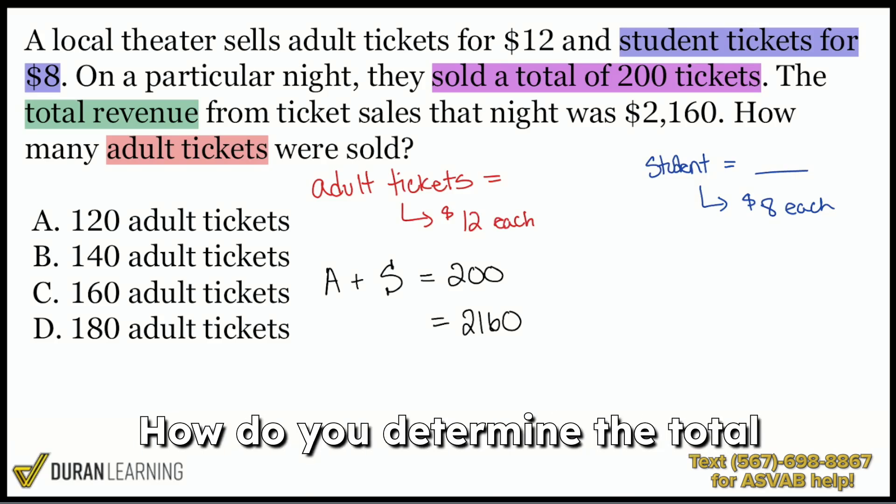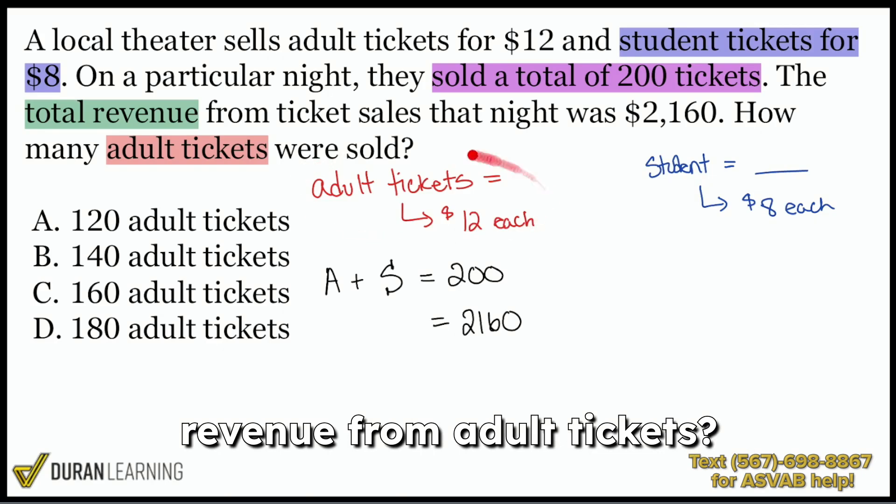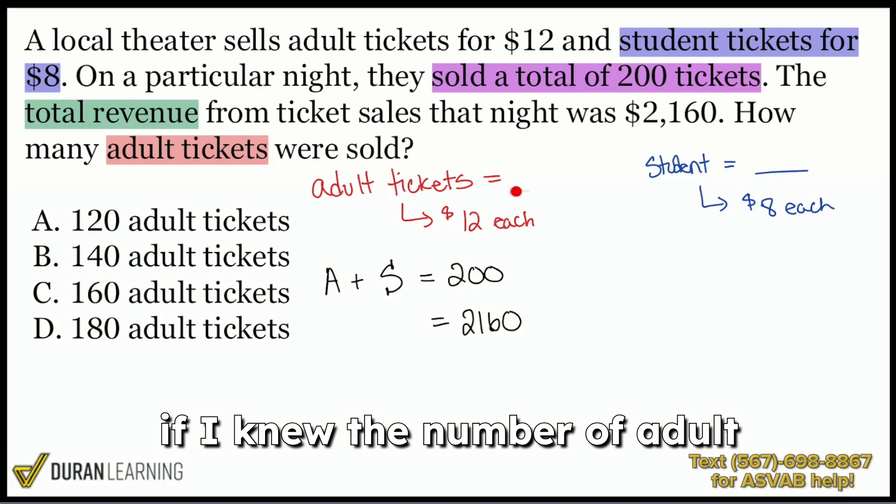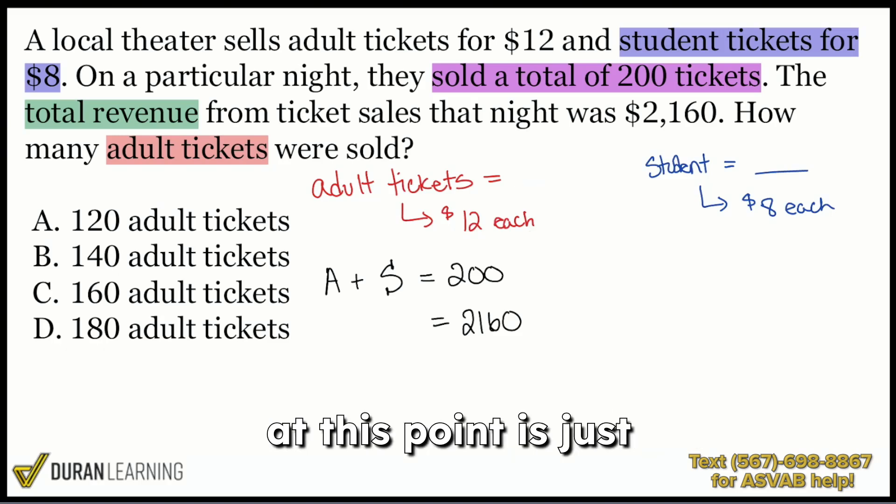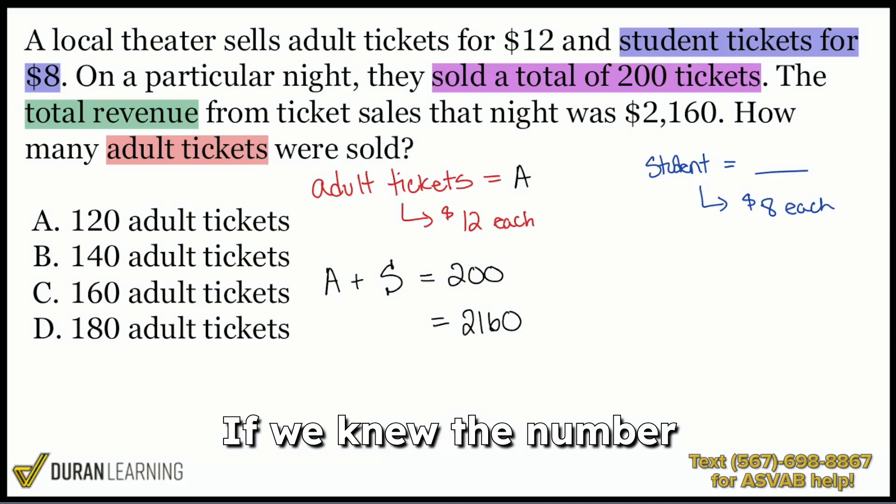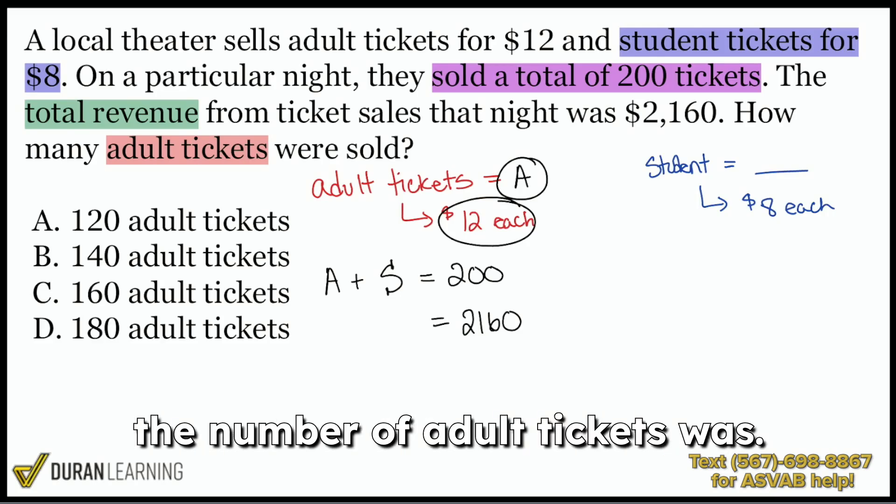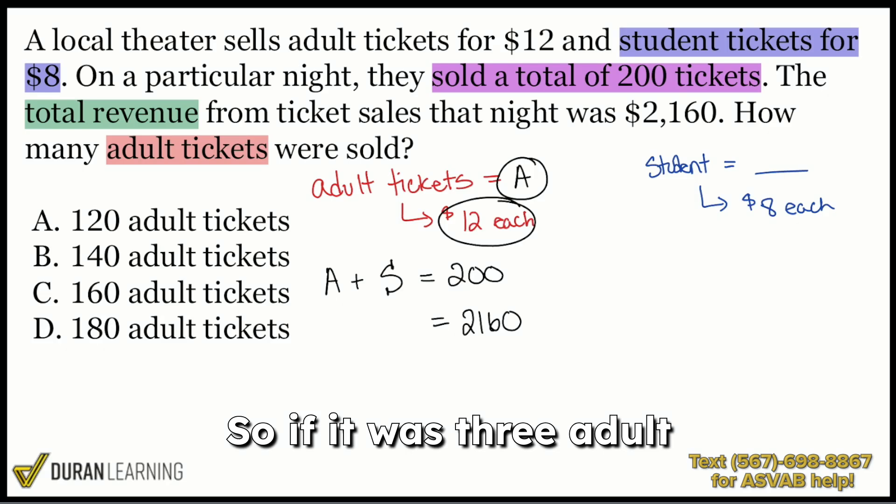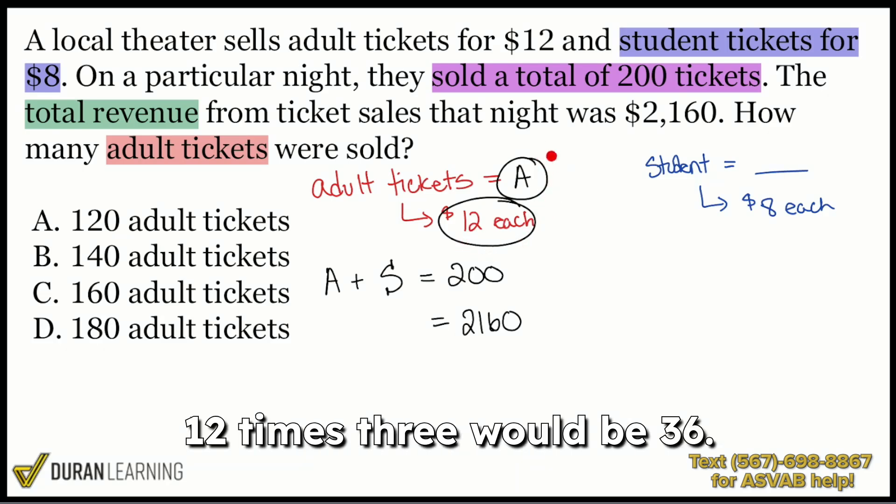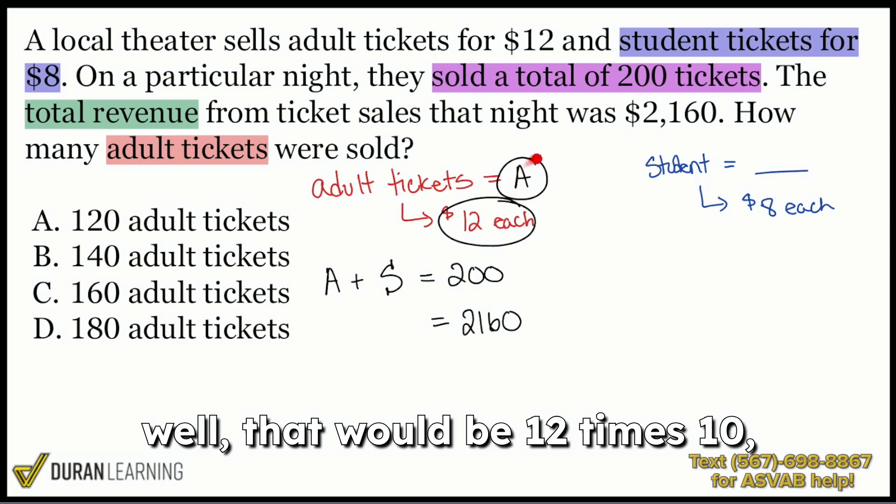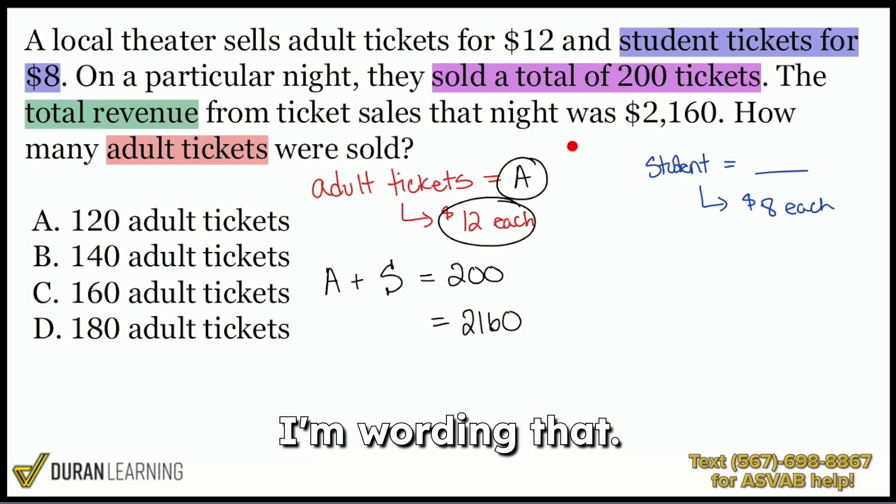How do you determine the total revenue from adult tickets? Well, since they're $12 each, if I knew the number of adult tickets, which again, at this point, it's just going to be A, it would be $12 times whatever the number of adult tickets was. So if it was three adult tickets that we sold, 12 times three would be 36, right? If we had 10 adult tickets sold, that would be 12 times 10, $120.